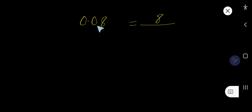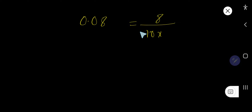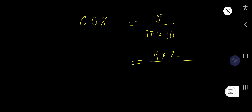Let us take this example: 0.08. Remove the decimal point and write the number — we get 8. For every digit after the decimal point we need to consider 10: 10 for 0 and 10 for 8, so we multiply them to get 100 in the denominator. Now break 8 as 4 times 2 and 10 as 5 times 2. The 2s cancel each other.